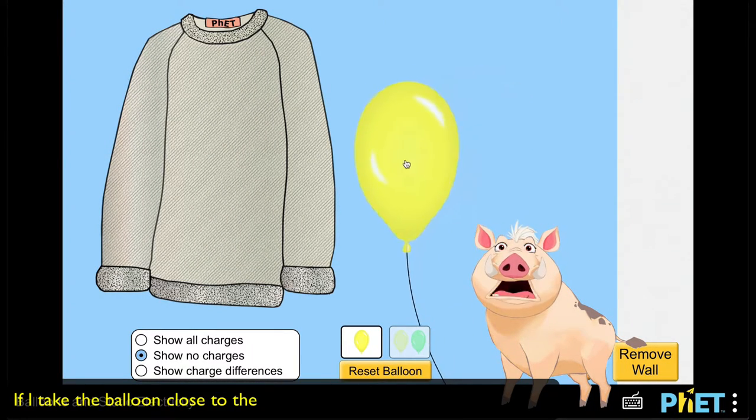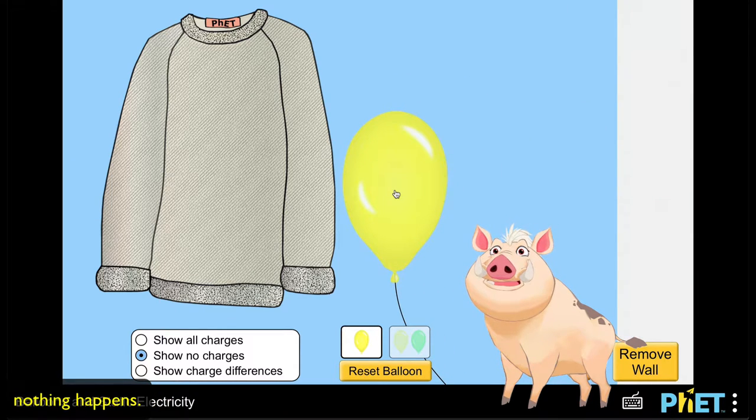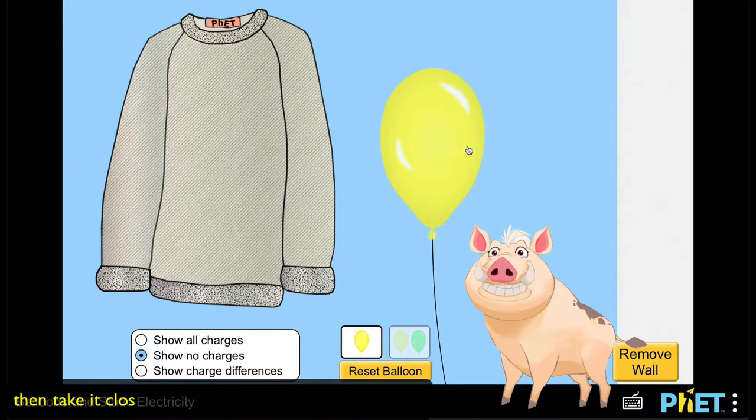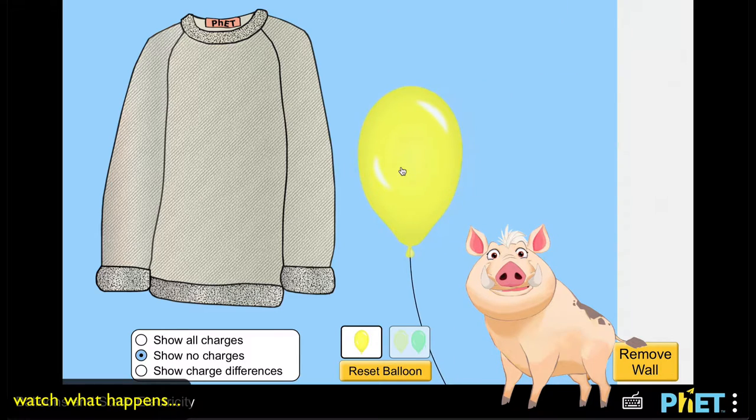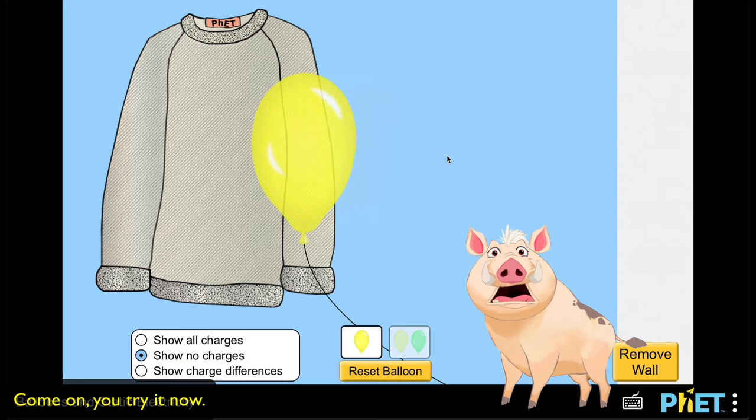If I take the balloon close to the woolen pullover or close to the wall, nothing happens. But if I rub the balloon on the woolen pullover first, then take it close to the pullover or close to the wall, watch what happens—it sticks! Come on, you try it now. Use the simulation below.